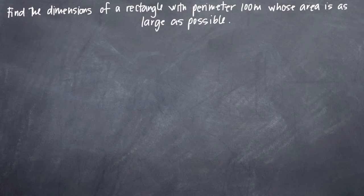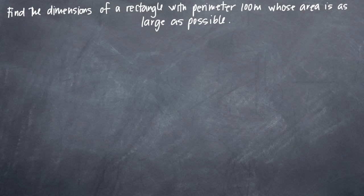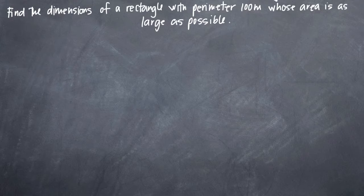In this particular optimization problem, we've been asked to find the dimensions of a rectangle that has a perimeter of 100 meters, whose area is as large as possible. As with any optimization problem, the first thing we want to do is draw a picture of what we've been asked to find so that we can visualize what we're doing.